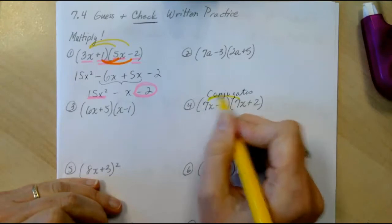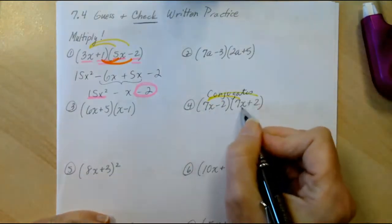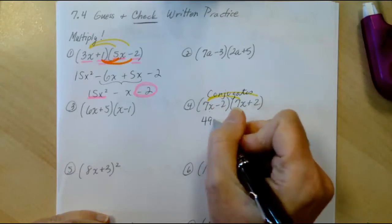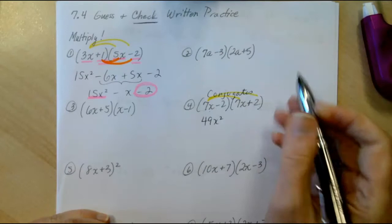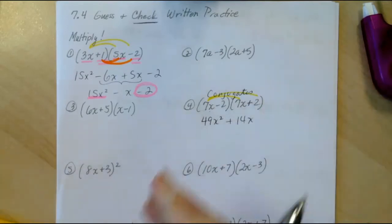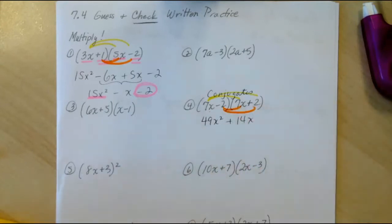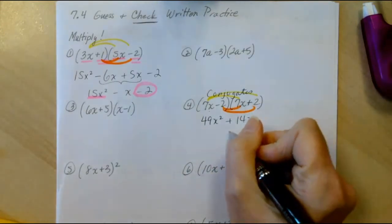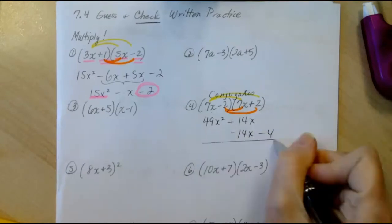First, we're going to distribute the 7x through. When we do that, 7x times 7x is 49x squared. 7x times a positive 2 is plus 14x. Next, we're going to take the negative 2 through, and that gives us negative 14x minus 4.